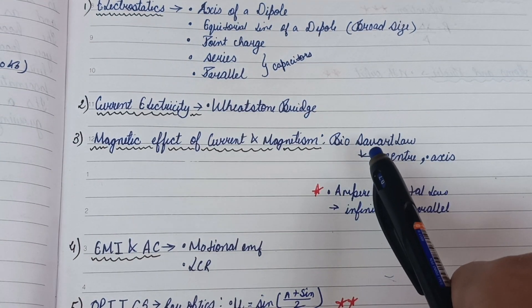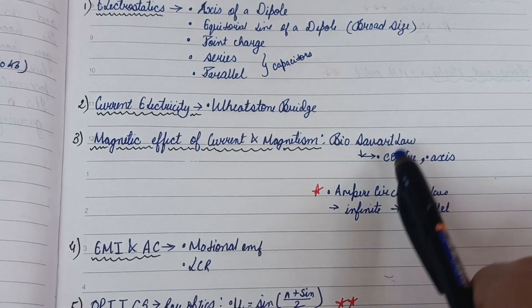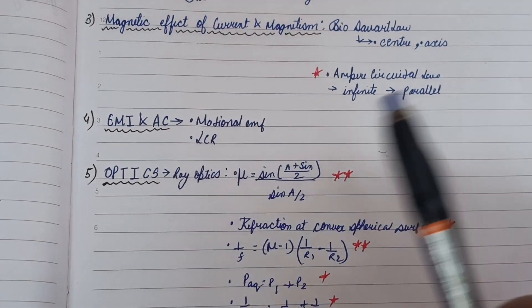From Magnetic Effect of Current, you have to do both. Then from EMI and AC: motional EMF and LCR.